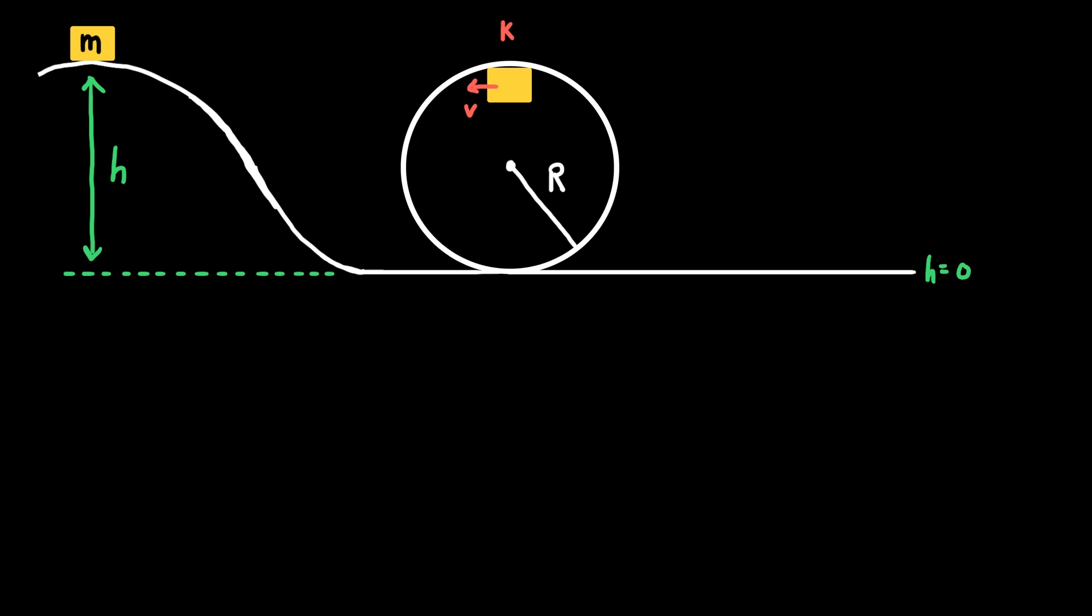And so the quickest way to solve this problem is to write a conservation of mechanical energy equation where initially the cart is at the top of the ramp and finally the cart is at the top of the loop. And we'll assume that the mechanical energy of the cart-Earth system is conserved here. And so initially at the top of the ramp, the cart-Earth system has gravitational potential energy and the amount of gravitational potential energy the system has is MGH.